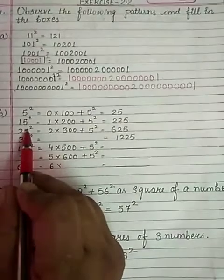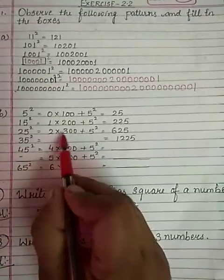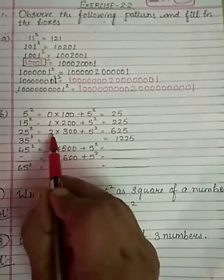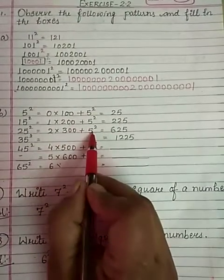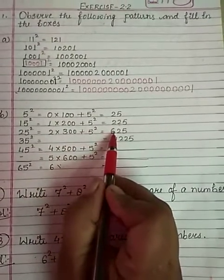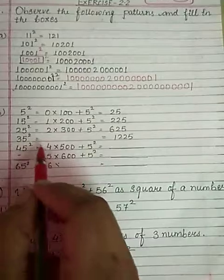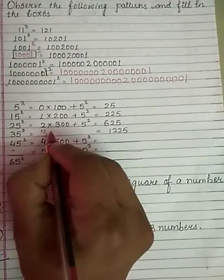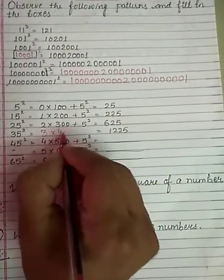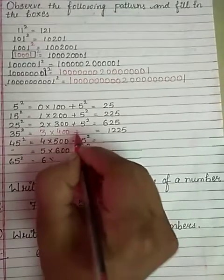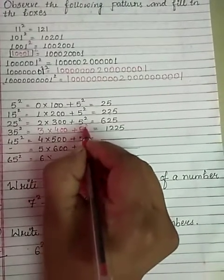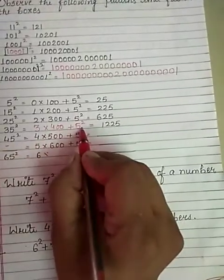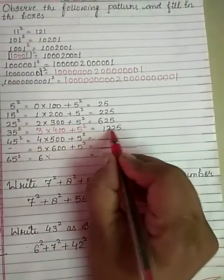25 whole square: 2 into 300 plus 5 square. 2 into 300 = 600, plus 5 square 25 = 625. 35 square is equal to 3 into 400 plus 5 square. 3 into 4 = 12, so 1200 plus 25 — answer is equal to 1225.